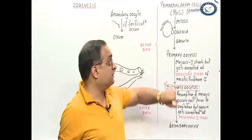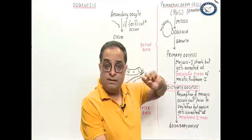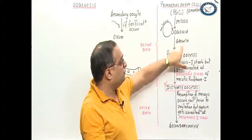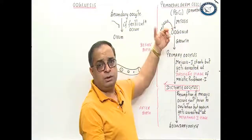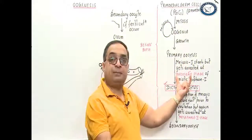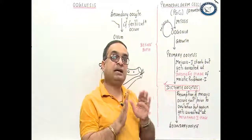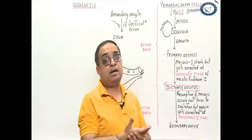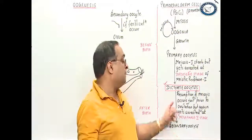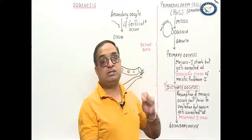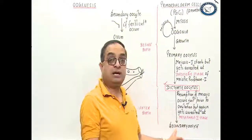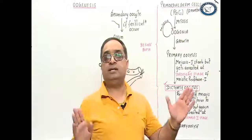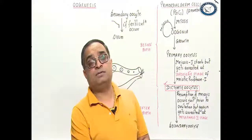Quick recap: Primordial germ cells are present in both ovaries before birth. They undergo mitosis to form oogonia. Oogonia undergo growth phase to form primary oocytes; oogonia can also form more oogonia by mitosis. Meiosis starts but gets arrested at the diplotene stage — oocytes are called dictyate oocytes. At birth, all oocytes in both ovaries are dictyate oocytes. Resumption of meiosis occurs just prior to ovulation during puberty, but again gets arrested at metaphase 2 — forming the secondary oocyte, which will form the ovum if fertilization occurs; otherwise it is destroyed in the fallopian tube.